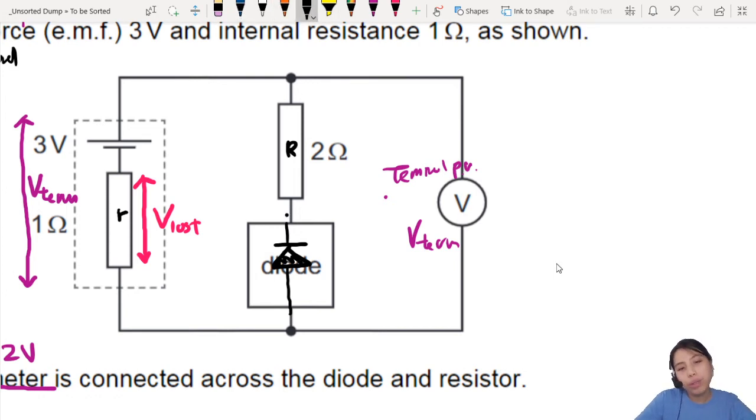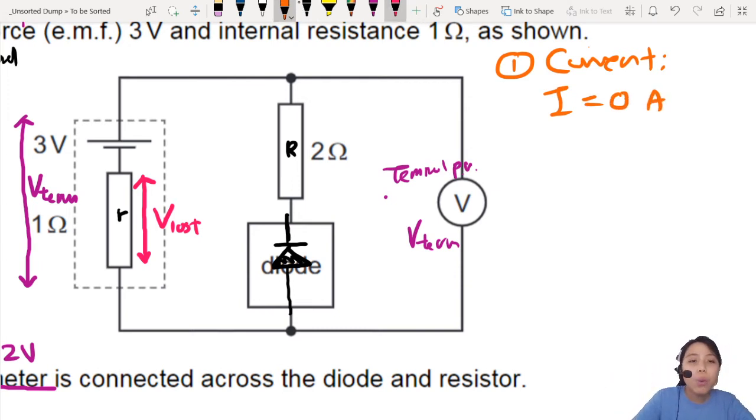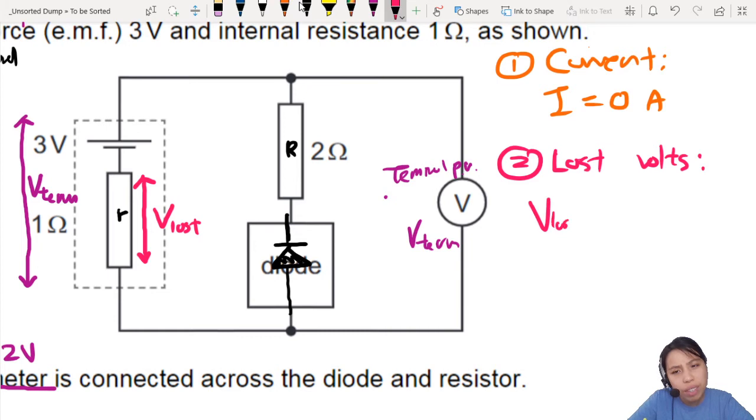Infinite resistance, you're not going to let anything go through that. And current cannot flow through the voltmeter. Maybe there's negligible current, but we don't know. So this is our first thing. Number 1, if you want to find the current, there is no current. No current shall pass. 0 amps. So if you found current, what is the amount of lost volts? Think about it. Will there be any lost volts? Lost volts we calculate by I times R, right? And if there's no current, there is no lost volts.